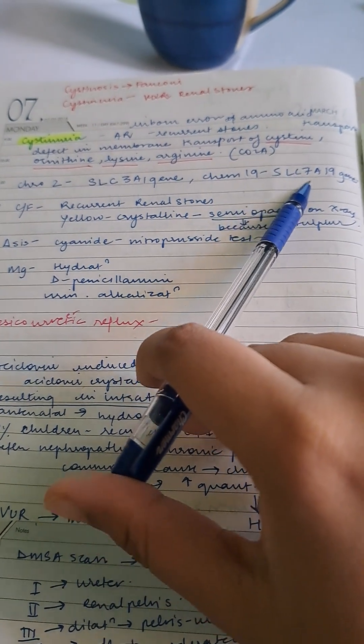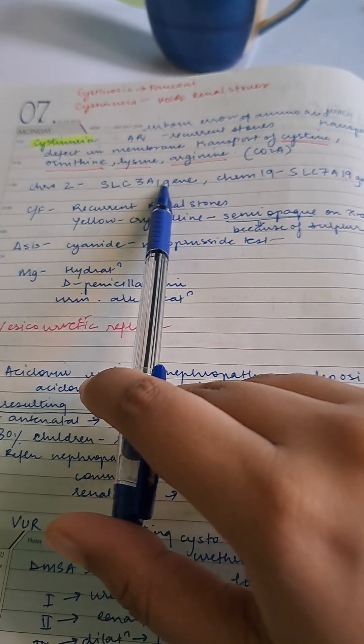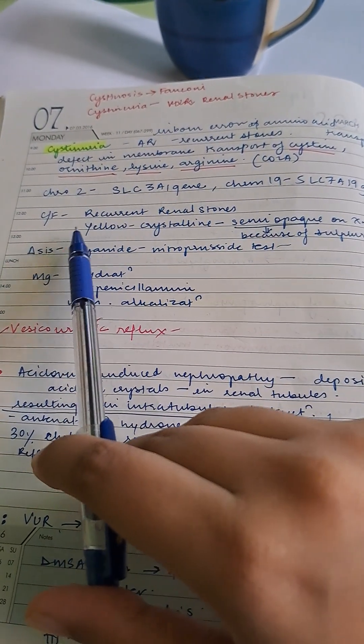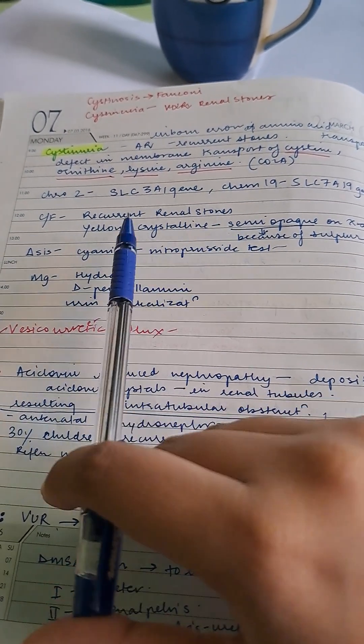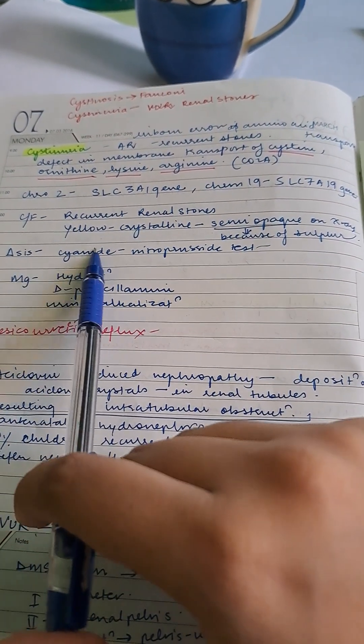There are two types of cystinuria: type A and non-type A. Clinical features include recurrent renal stones that are yellow crystalline and semi-opaque on x-ray due to sulfur content.